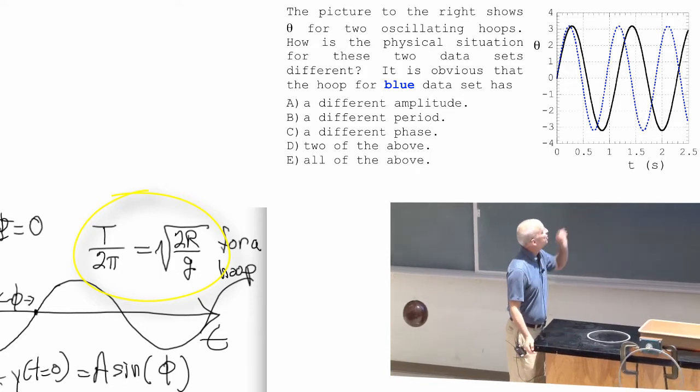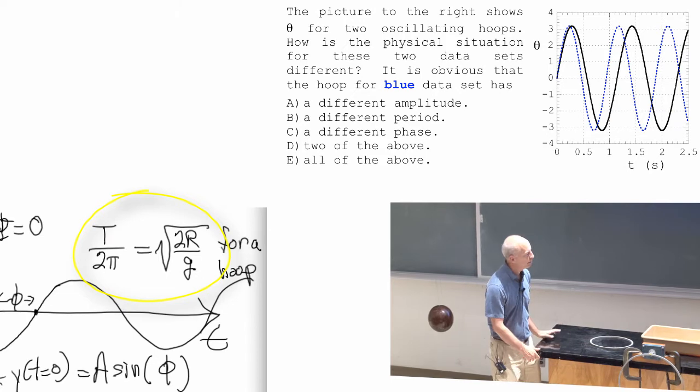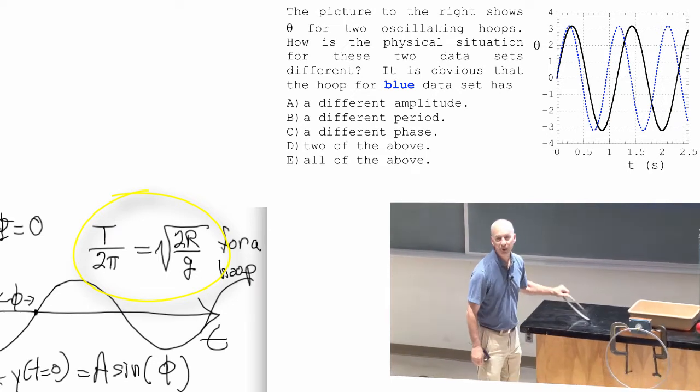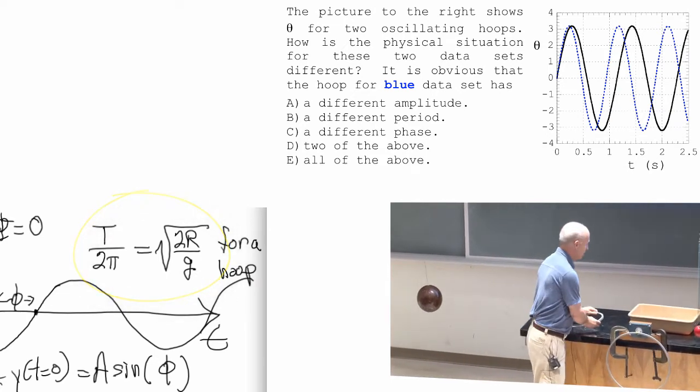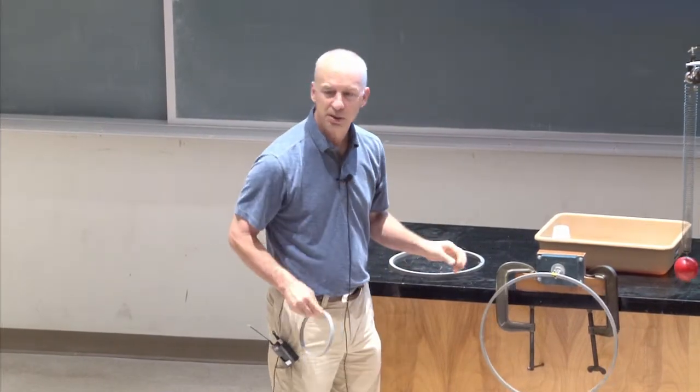So the way to get the period to be shorter, like that blue one is shorter, is to pick a smaller r. I'm going to go a lot smaller, so it's obvious.